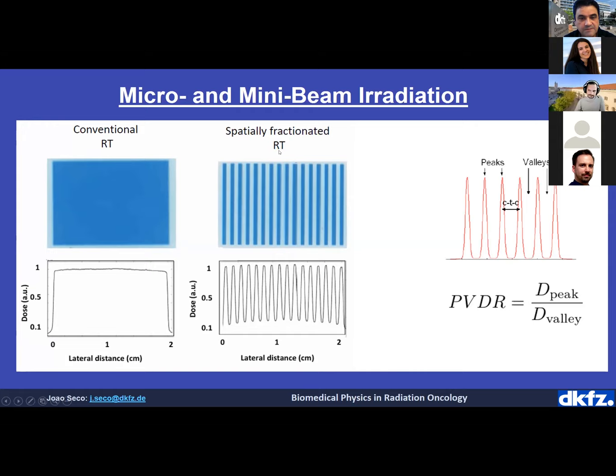In conventional radiotherapy, we deliver uniform dose distributions to the tumor. In spatially fractionated radiotherapy we deliver alternating peaks and valleys of dose — a zigzag pattern — with very high peak dose and extremely low valley dose. We define the peak-to-valley dose ratio (PVDR) as the ratio of peak to valley dose, and the center-to-center distance (CTC) as the distance between two peaks.